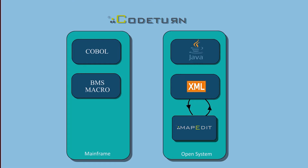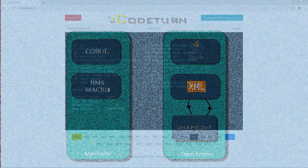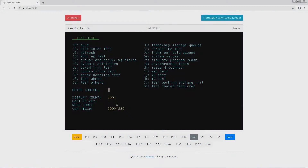Once CodeTurn has transformed the sources to Java and the application is deployed on the servers, the application is accessed by end users through a web browser, which looks like this.